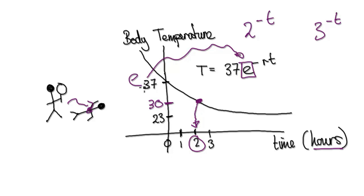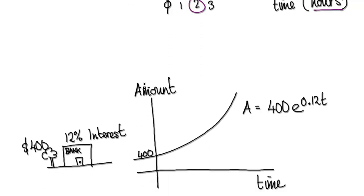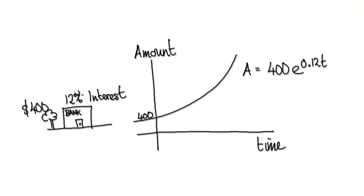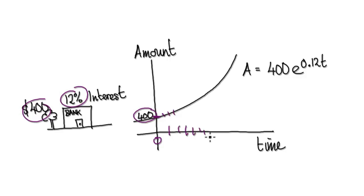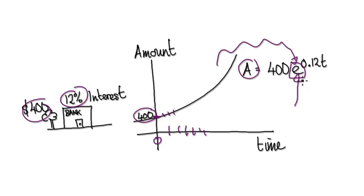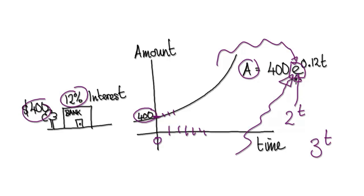Here's another example. Let's say a bank gives you 12% interest and you put $400 in. At time 0 the amount in the bank is $400, and as time ticks away, the amount of money is modelled by e. Why do we use e? Why not 2 to the power of t or 3 to the power of t? Why do we always insist on using the number e?